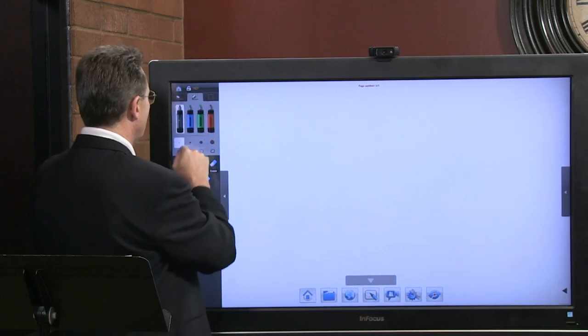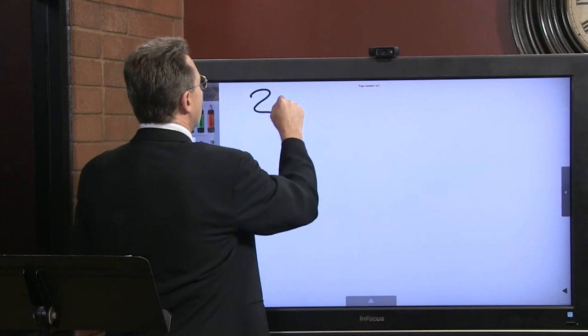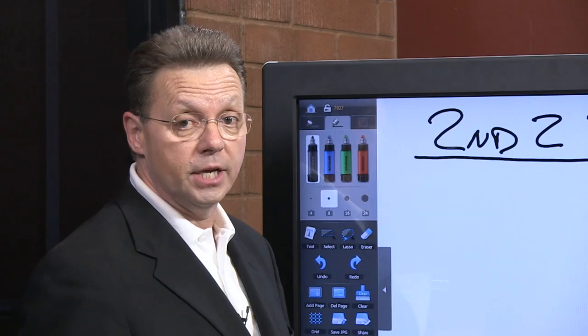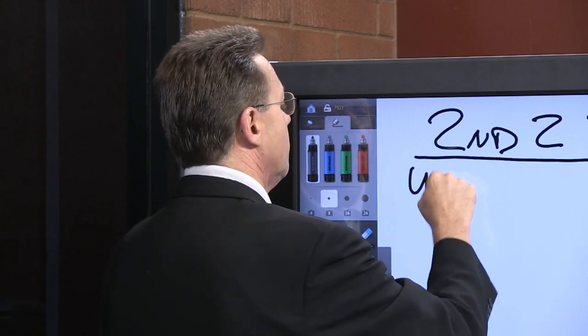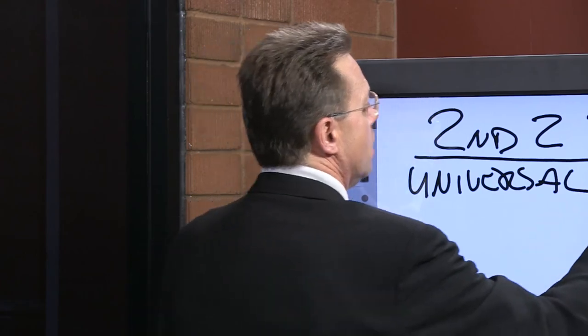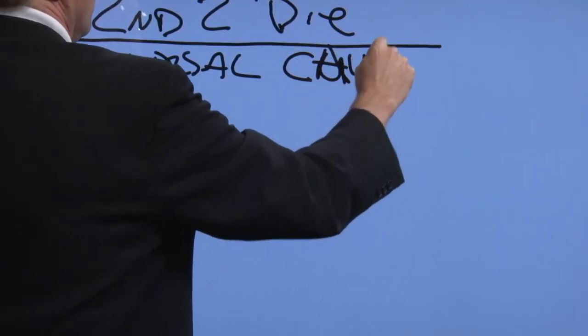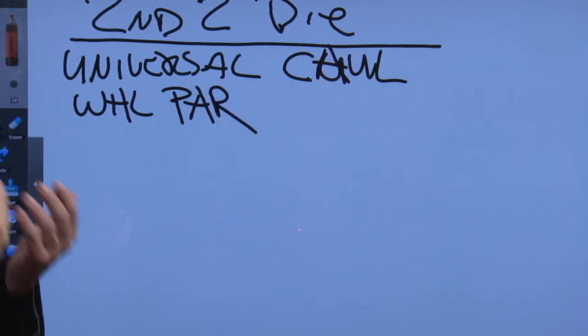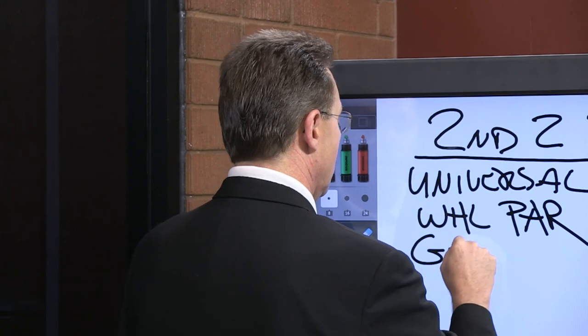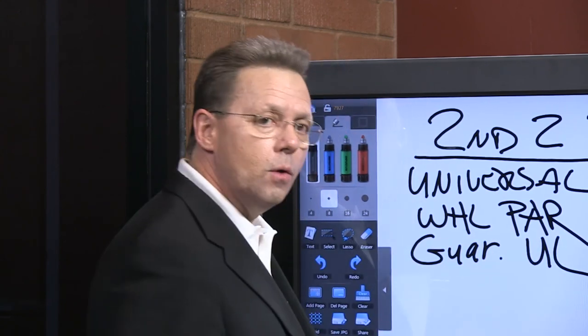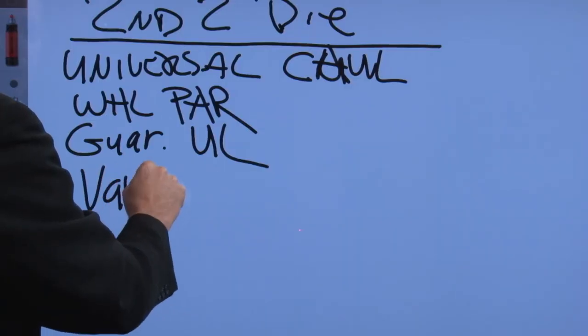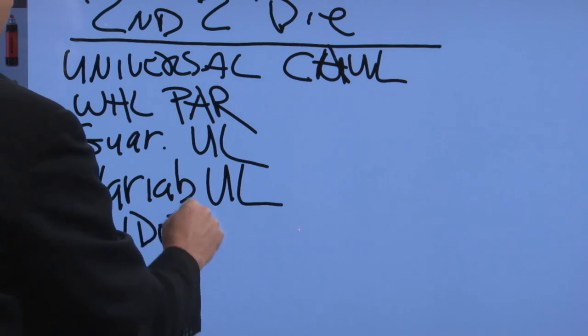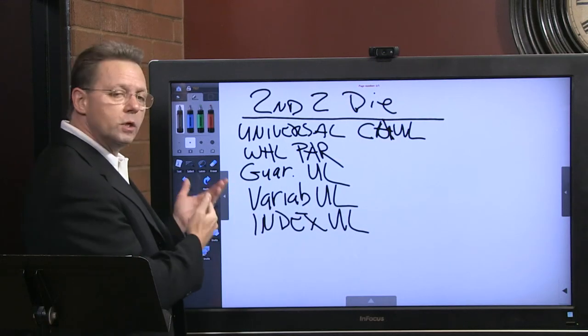Let's go to the whiteboard. I just want to show you a few premises. Second to die or survivorship has several mortality chassis. The original mortality chassis, believe it or not, was actually universal life, current company practice, current assumption UL, and then whole life second to die par contracts, participating, that means they actually give a dividend. Then we started to see guaranteed UL, and then we actually evolved into variable UL, this is all second to die, and then of course we now have indexed UL.